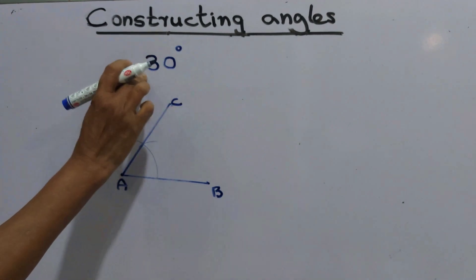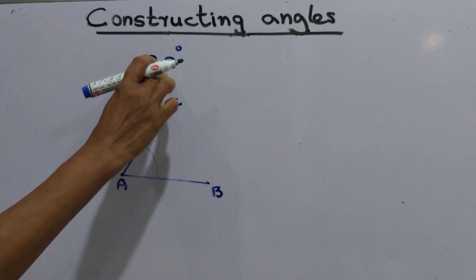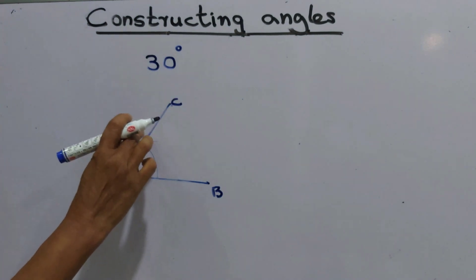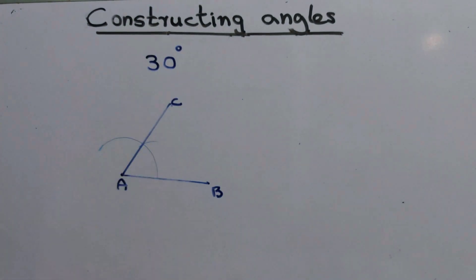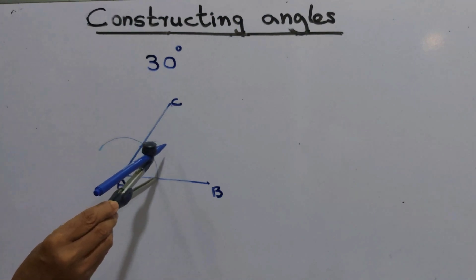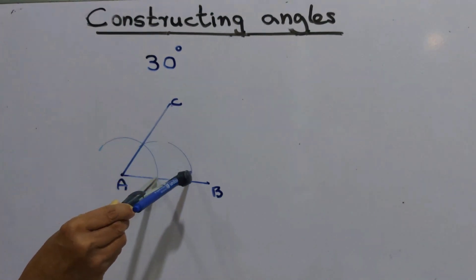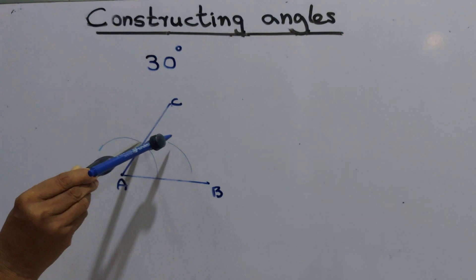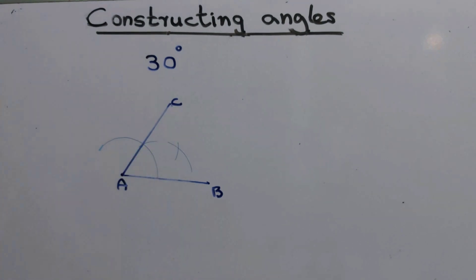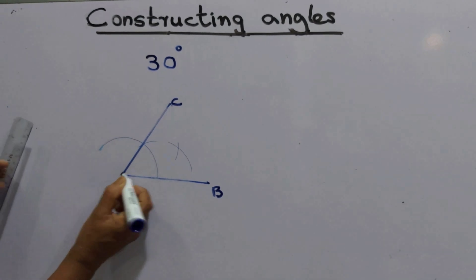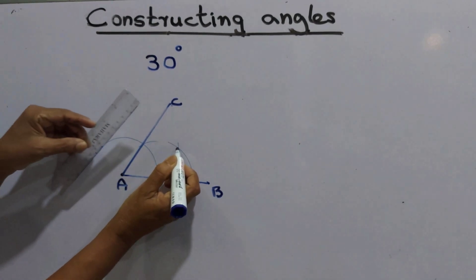Today we are going to construct an angle of 30 degrees. To do that, we have to bisect the 60 degree angle. Keep the compass point here, draw an arc, then another arc from the other point, and join the intersection back to point A.